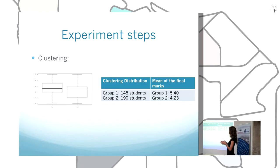After that, we did clustering based on the daily number of accesses of each student. We obtained two groups, and if we represent the final mark of these groups, we see that the first group has higher marks than the second group. In fact, the first group has a pass mark and the second group has a fail mark.